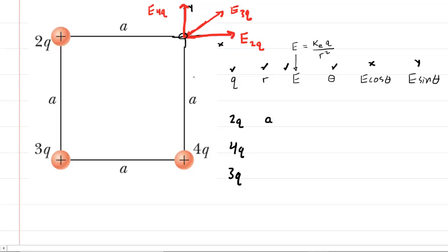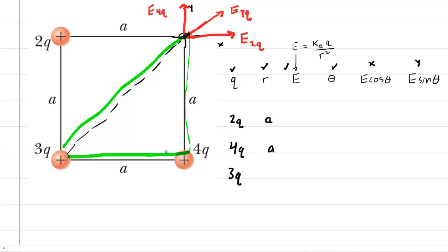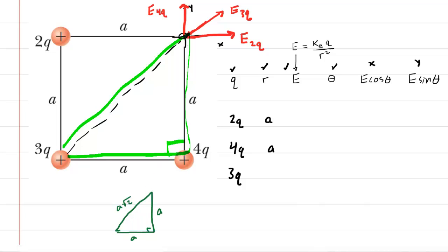The distance from 3Q to this location is a little trickier. You'll notice that we form a right triangle, with a right angle and two sides both marked A. From geometry, when a right triangle has two identical sides, the hypotenuse is A√2. This can be proved using the Pythagorean theorem, but we'll take it for granted that that distance is indeed A√2.